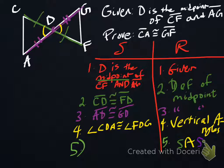that the left shape, triangle CDA, the entire triangle, not just the angle, is congruent to the right shape, the entire shape, which is triangle FDG.